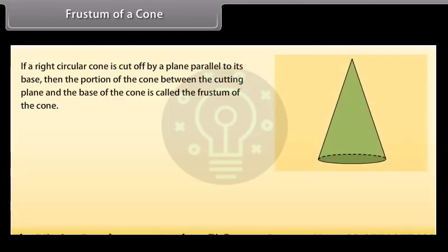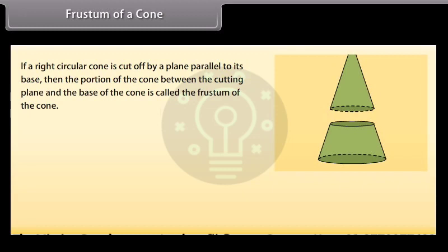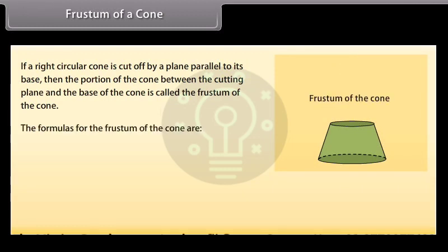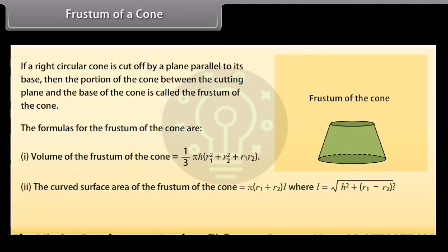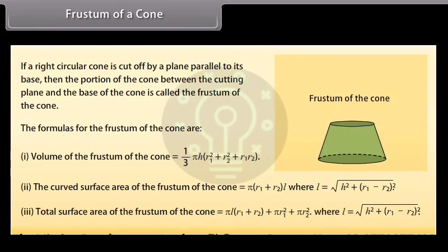If a right circular cone is cut by a plane parallel to its base, the portion of the cone between the cutting plane and the base of the cone is called the frustum of the cone. The formulae for the frustum of the cone are given, and we will use these formulas to find the volume and surface area in the next screen.